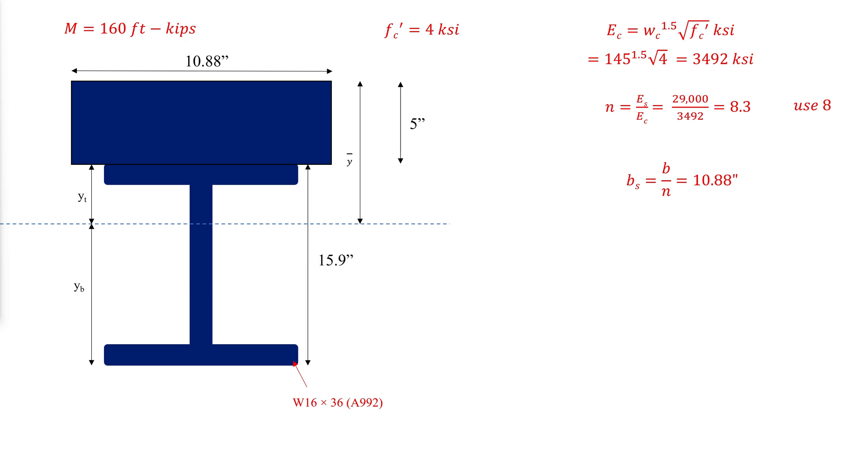The location of the neutral axis from the top would then be the sum of the product of areas and the distance of their center divided by the sum of the areas. Let us put the calculations in a table to make it easier.